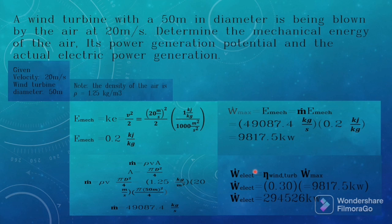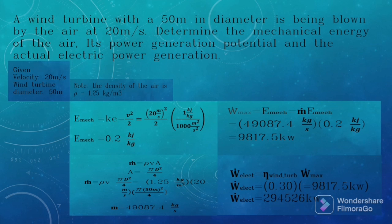We can find the actual electric power generation by multiplying the efficiency of the wind turbine by the power generation potential. Using an efficiency of 0.30: 0.30 × 9,817.5 kW equals 2,945.26 kilowatts. That is our actual electric power generation.